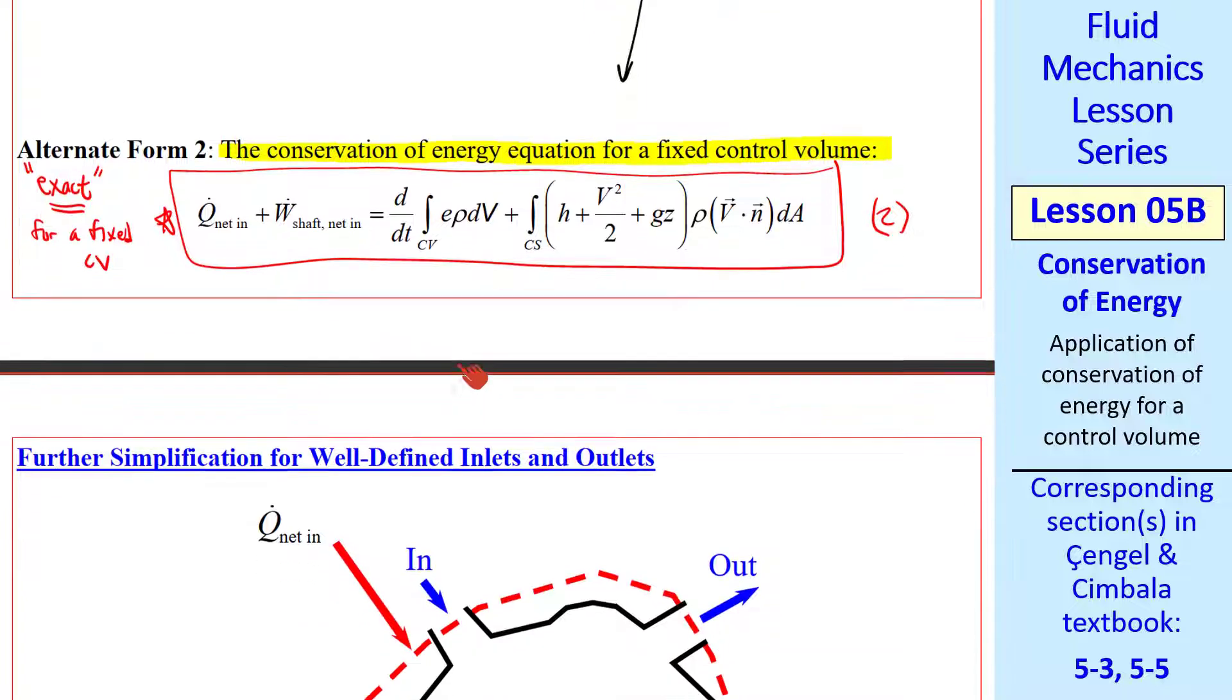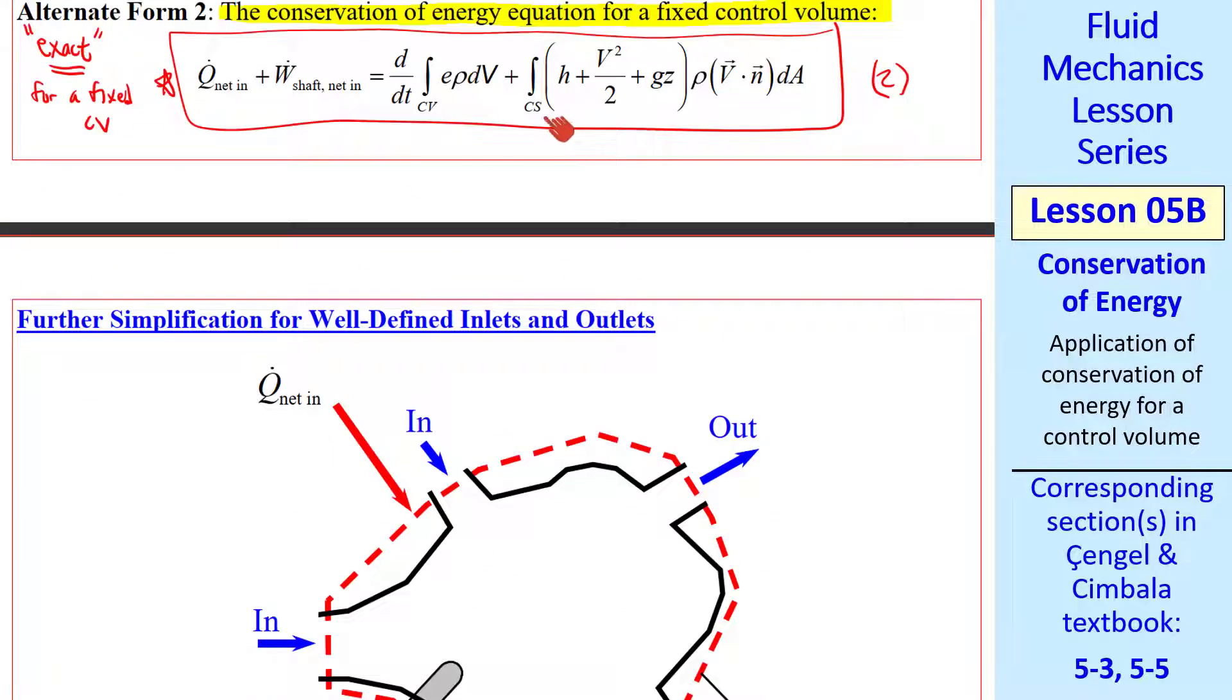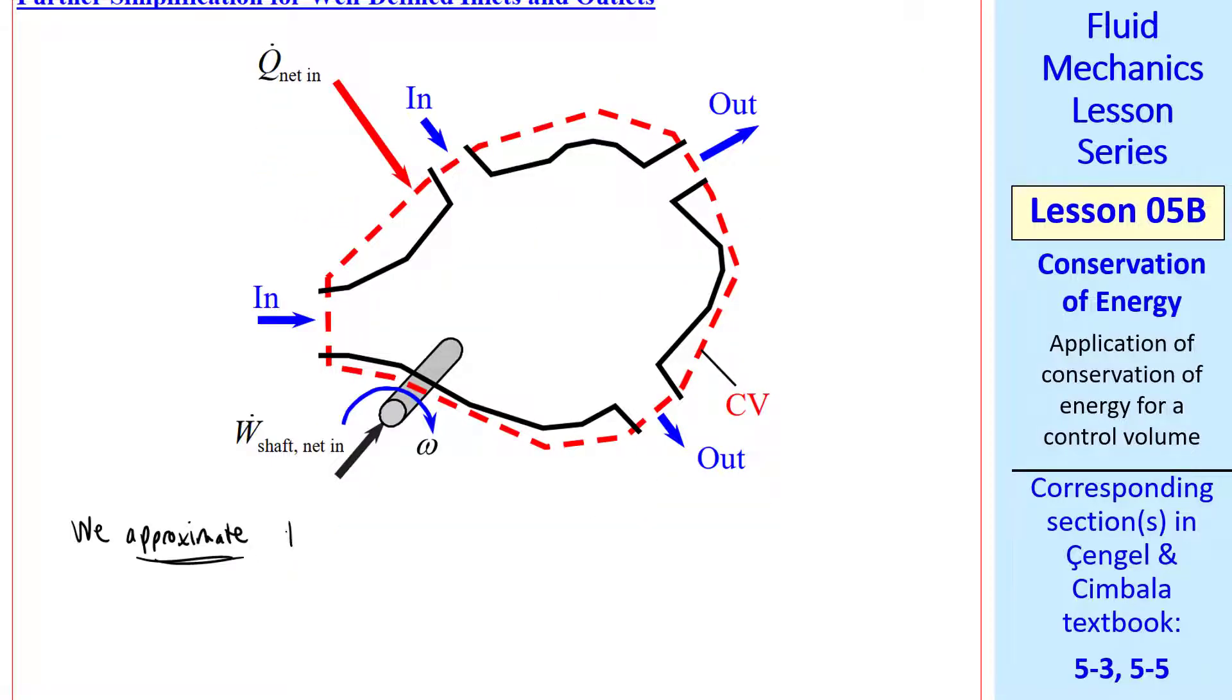Now let's do some simplifications. If we have well-defined inlets and outlets as in this diagram, we can replace the control surface integral by summation signs over these inlets and outlets, where V⃗·n̂ dA becomes just simply V times A, for cases where the velocity comes in perpendicular to the area, or goes out perpendicular to the area.